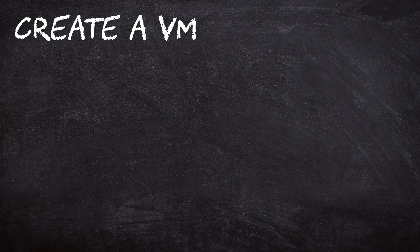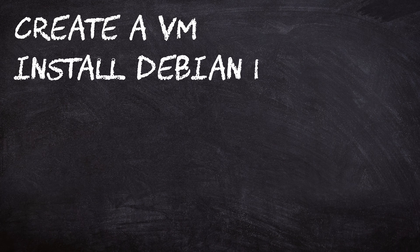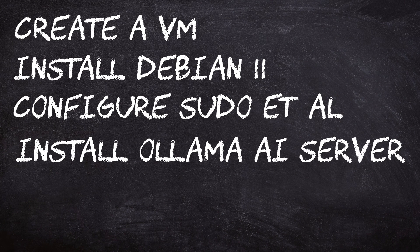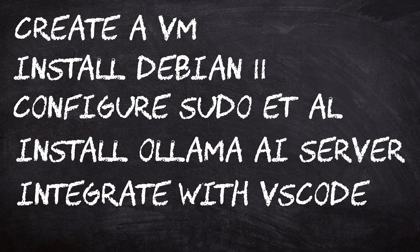So today I'm going to show you how to create a virtual machine, configure a Linux distro — in our case we're using Debian 11 — install the basic things we need like sudo, Docker, Portainer, NVIDIA drivers, and the NVIDIA Container Toolkit, install Ollama and some of the best models, and finally integrate it with your coding editor of choice. We're doing VS Code because most of you really like it.